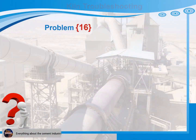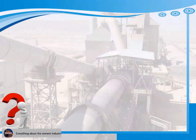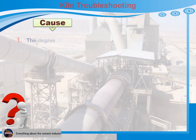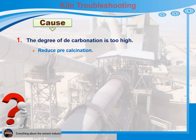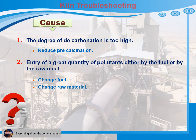Problem 16: Coatings in the kiln inlet. Cause 1: The degree of decarbonation is too high. Recommendations for action: Reduce precalcination. Cause 2: Entry of a great quantity of pollutants either by the fuel or by the raw meal. Recommendations for action: 1) Change fuel. 2) Change raw material. 3) Install bypass if required.